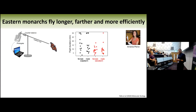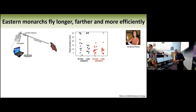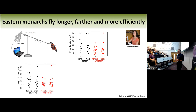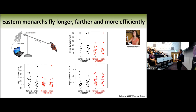In black are monarchs from Eastern North America; in red, monarchs from Western North America. Monarchs from Eastern North America flew for longer on these flight mills and therefore also traveled longer distances — that makes a lot of sense. But we also found that Eastern North American monarchs have a higher flight efficiency, measured as flight power: they use a lot less energy to travel the same distances. This is in line with their different migration distances and strategies — you go farther, you're more efficient.